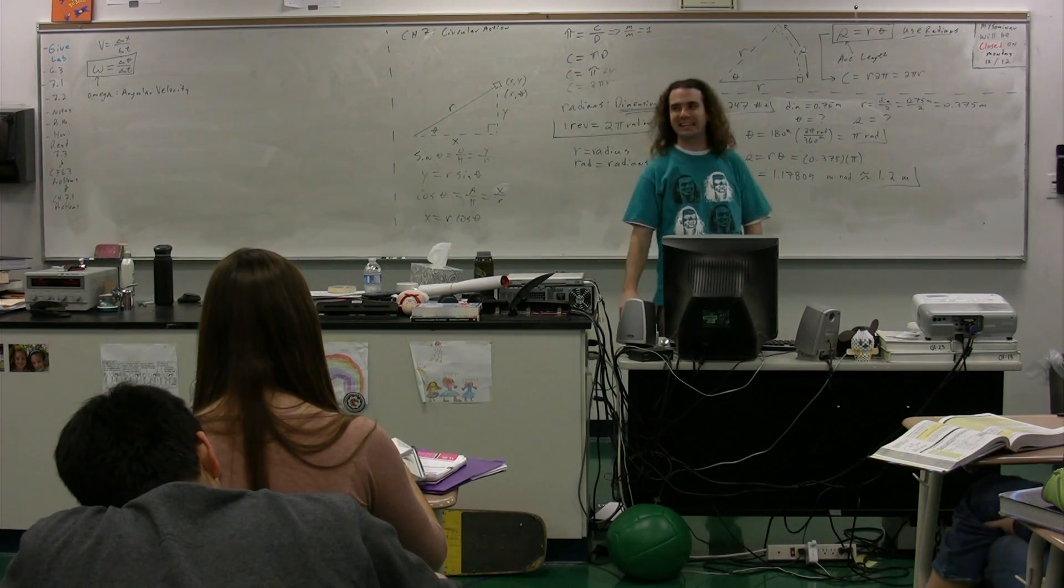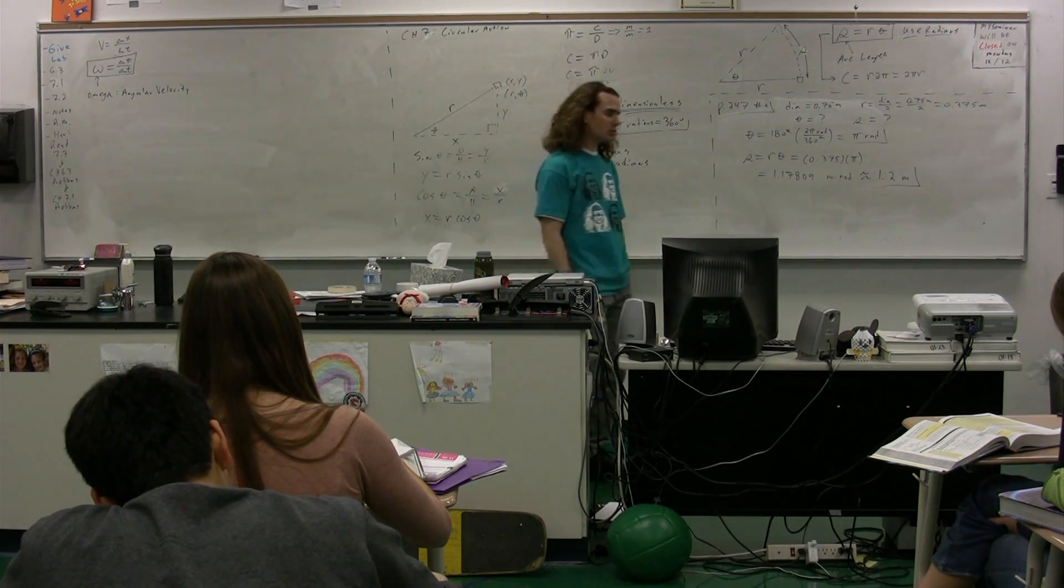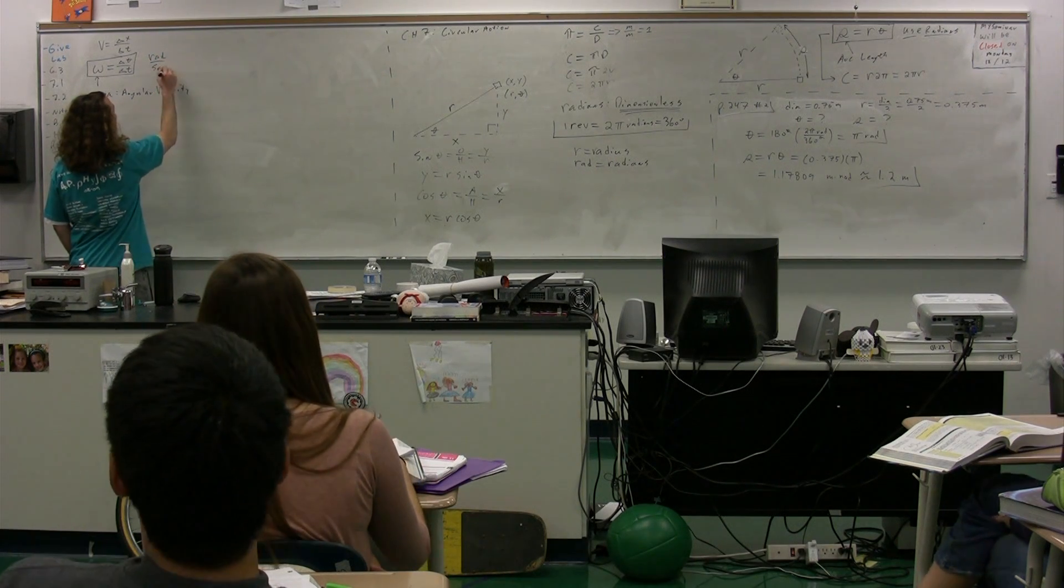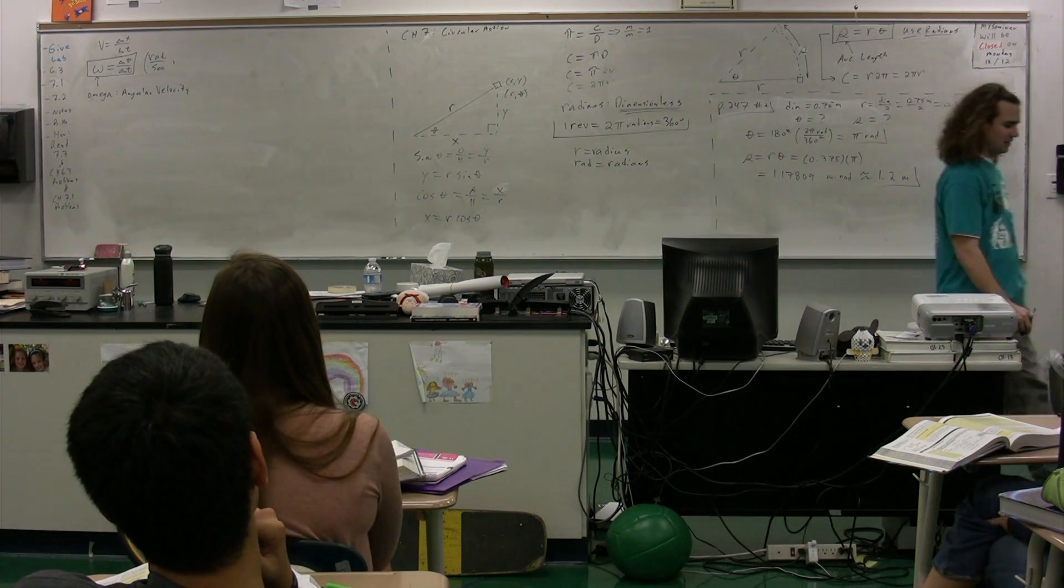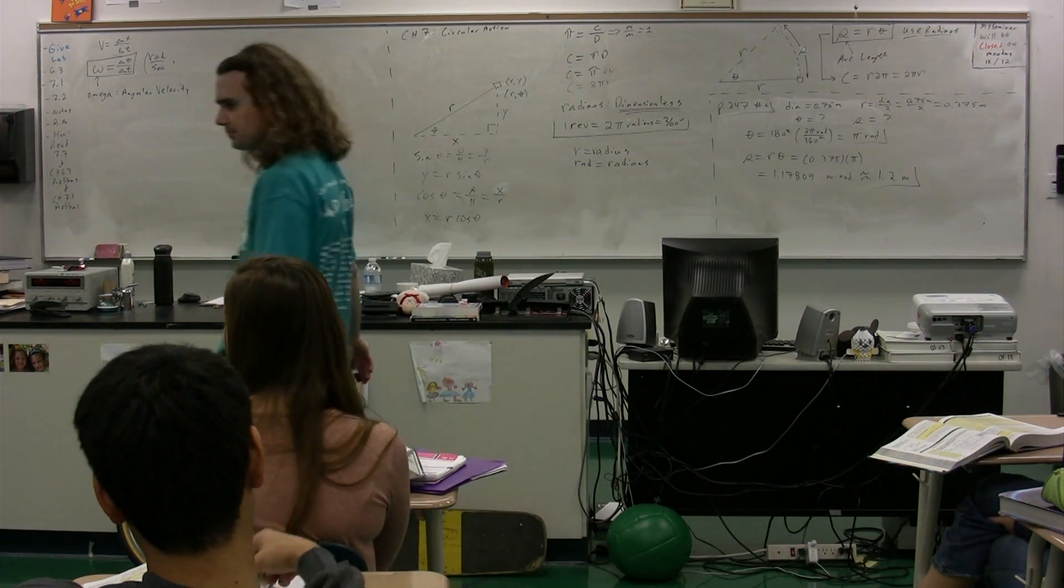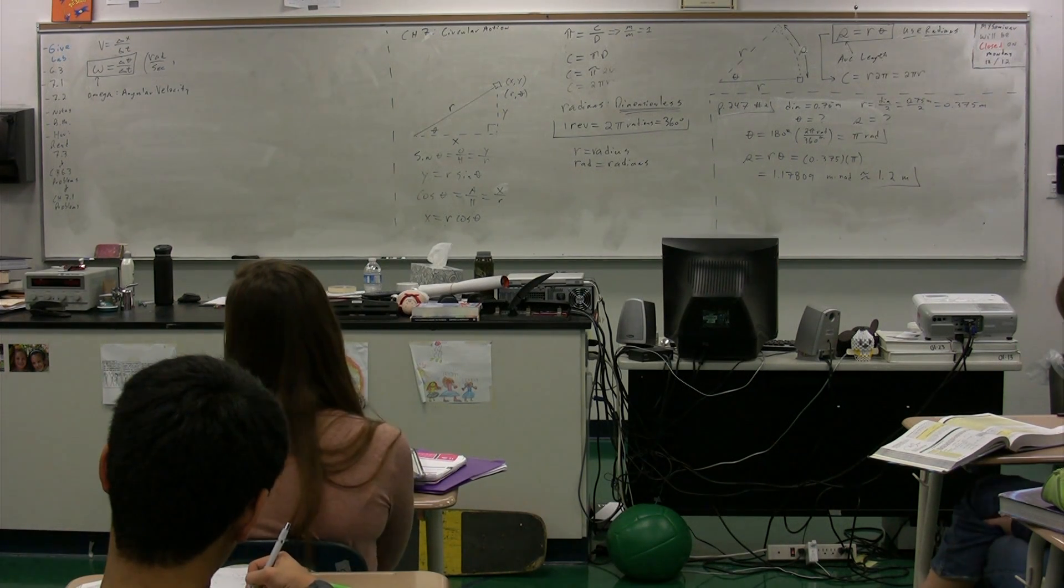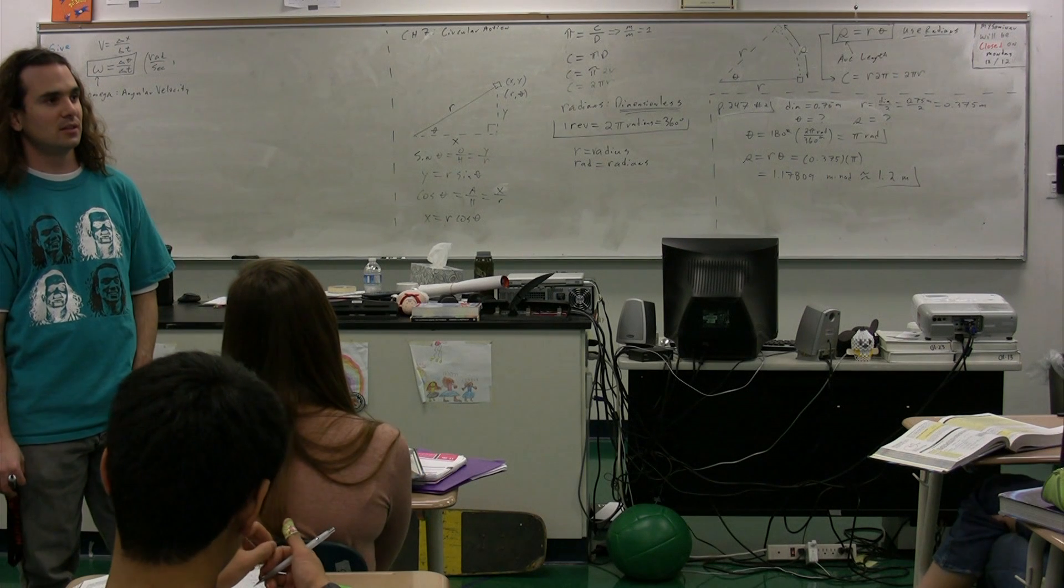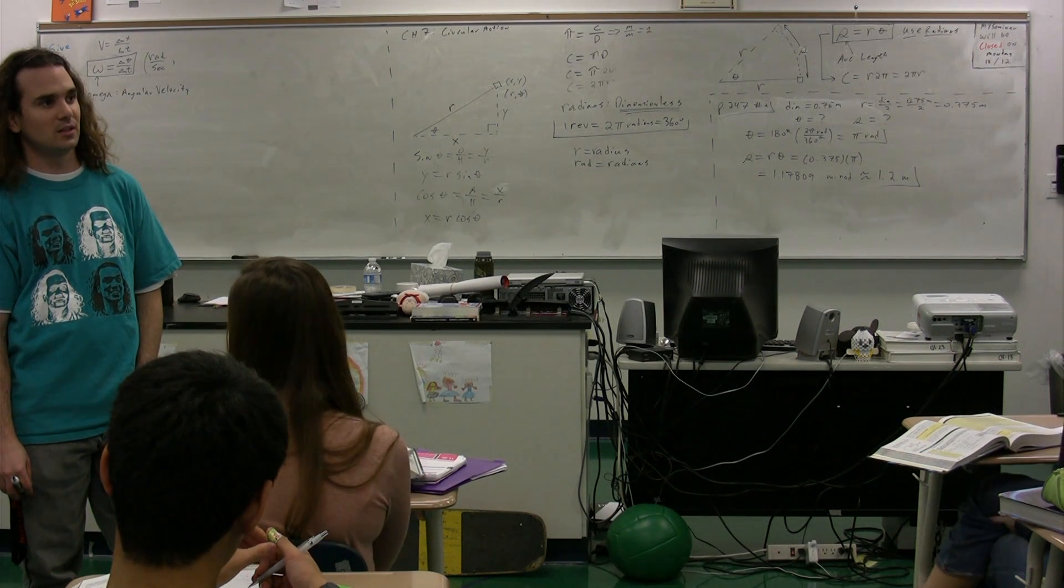Delta theta is the angular displacement or the change in position of an object. What are the possible dimensions for angular velocity? Radians per second is the most common one we're going to use in this class. There are all sorts of other examples for angular velocity. We could have degrees per second.